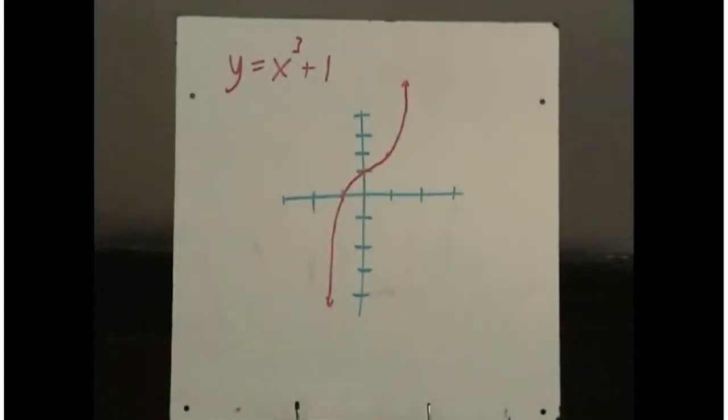There's another little reflection that can occur in a function, and it occurs when you take the equation of the function. Here's one here: y equals x cubed plus 1, and there's a sketch of what the graph looks like.